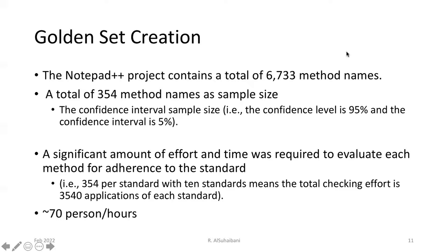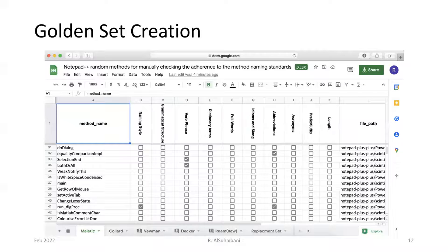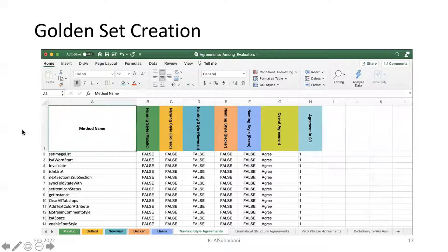We ended up evaluating a total of 354 method names out of 6,700 method names for this open source system. We spent a significant amount of time and effort to complete the assessment for each method name in the sample. This is a screenshot of the golden set creation.